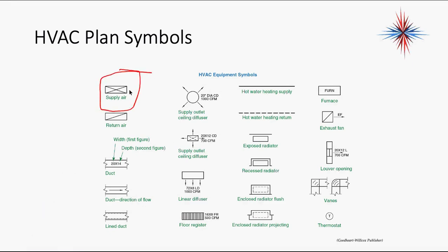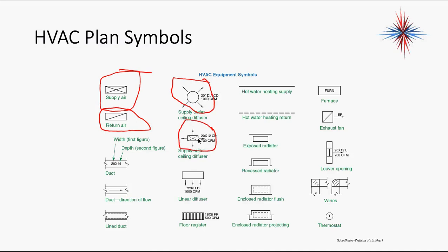The HVAC symbols you're going to use the most are supply air registers and return air registers. A supply air register is a rectangle with an X through it. A return air register is a rectangle with a single line across it. Those are the two you'll use more often. You'll also see a supply outlet — one of those circular things — where arrows indicate air goes in all directions, and a supply outlet ceiling diffuser works the same way.